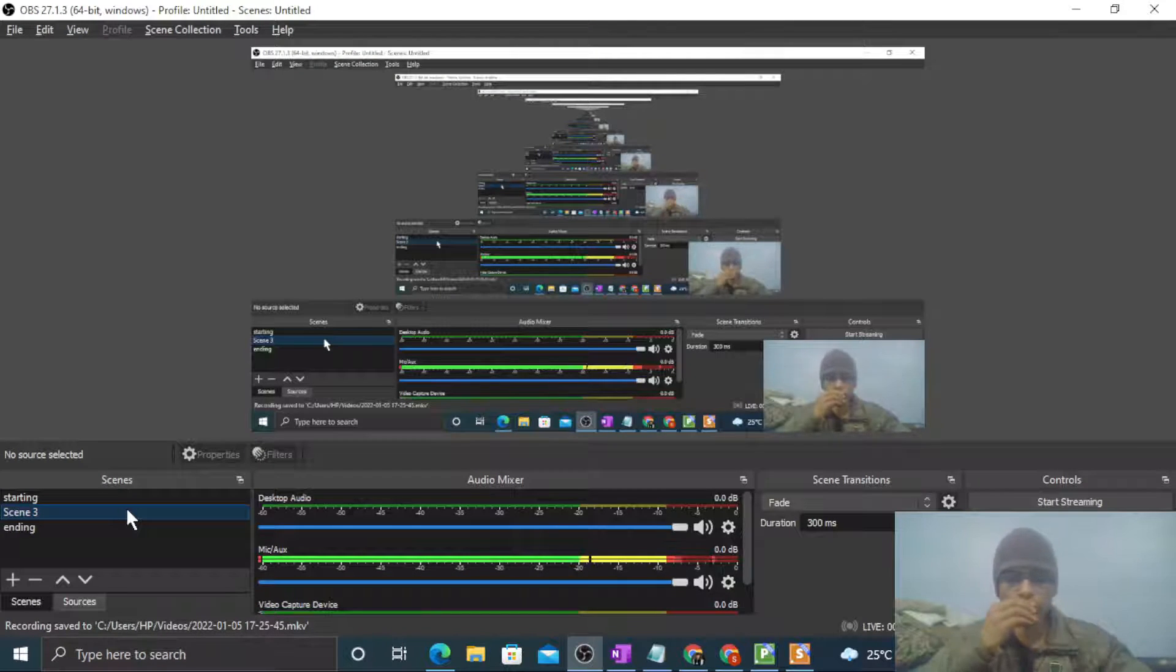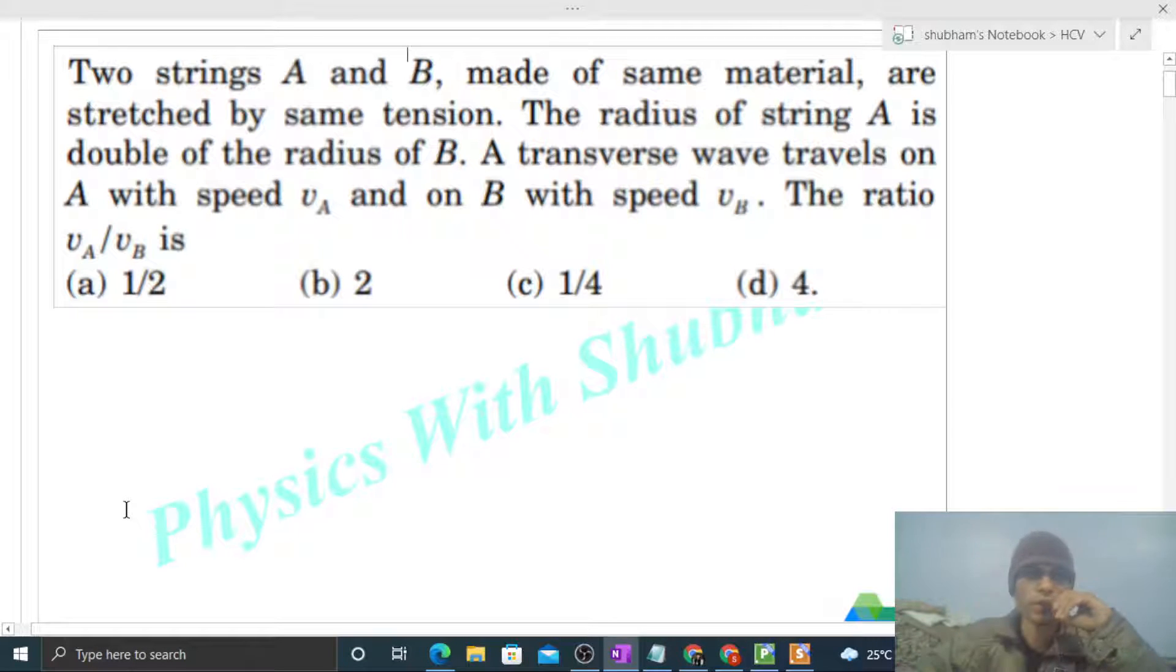Hi everyone, today let's discuss an interesting problem. Two strings A and B made of same material are stretched by same tension. The radius of string A is double of the radius of B. A transverse wave travels on A with speed VA and on B with speed VB. Find the ratio VA/VB.